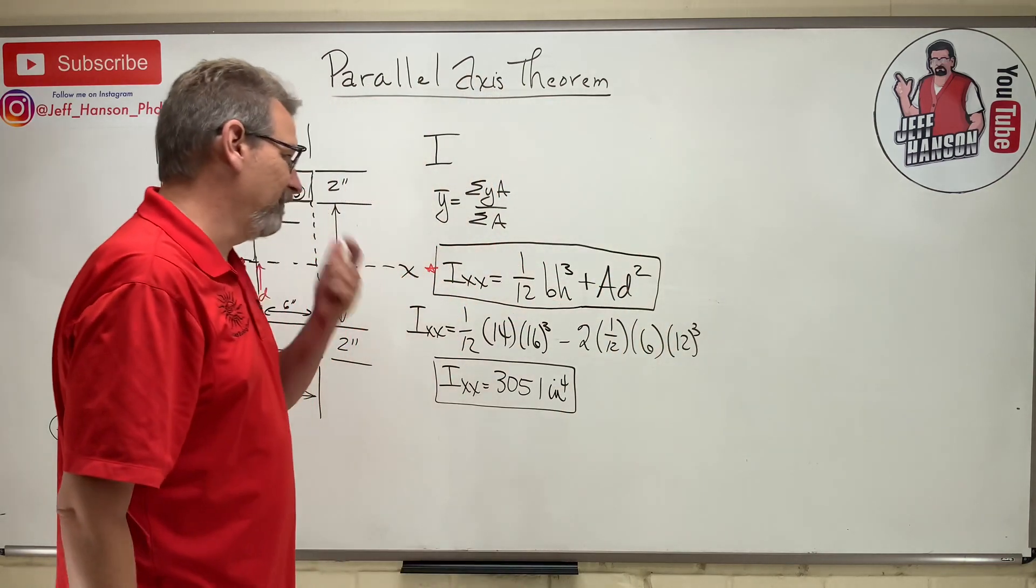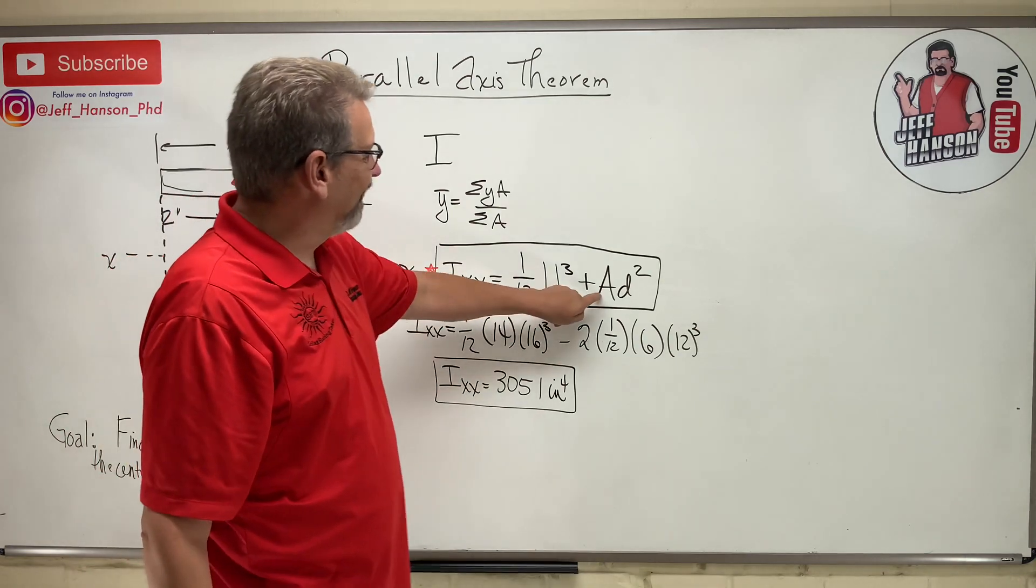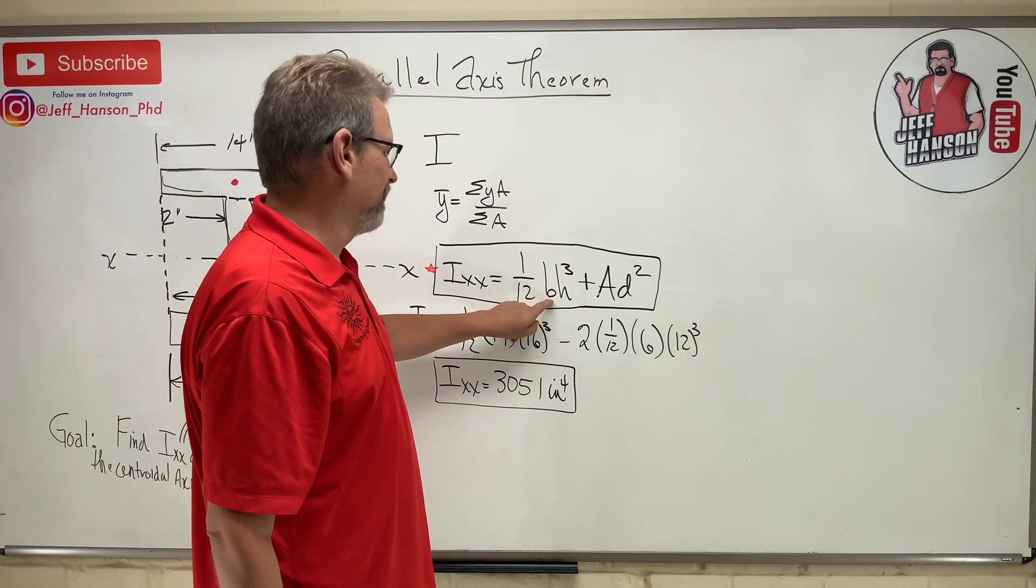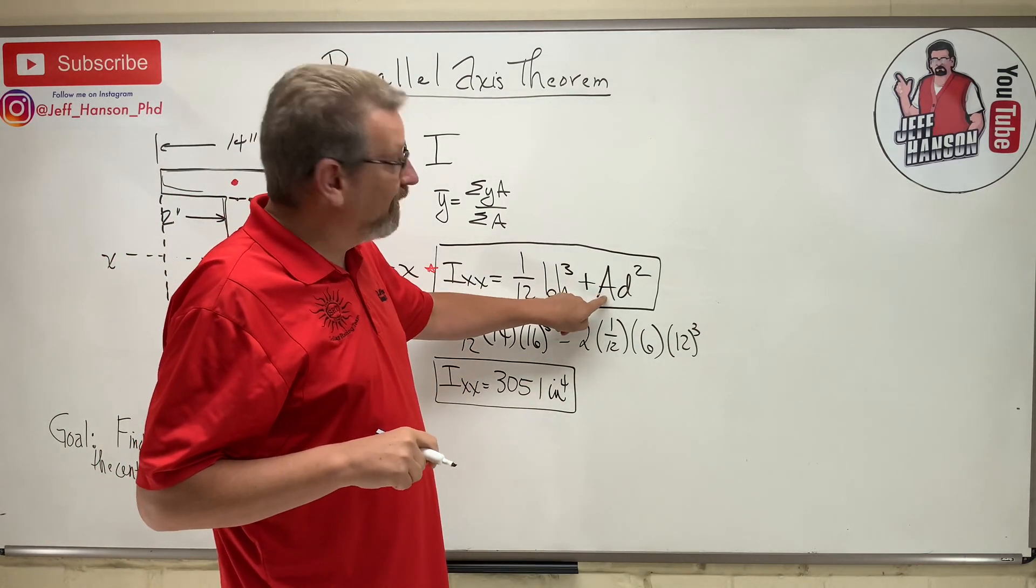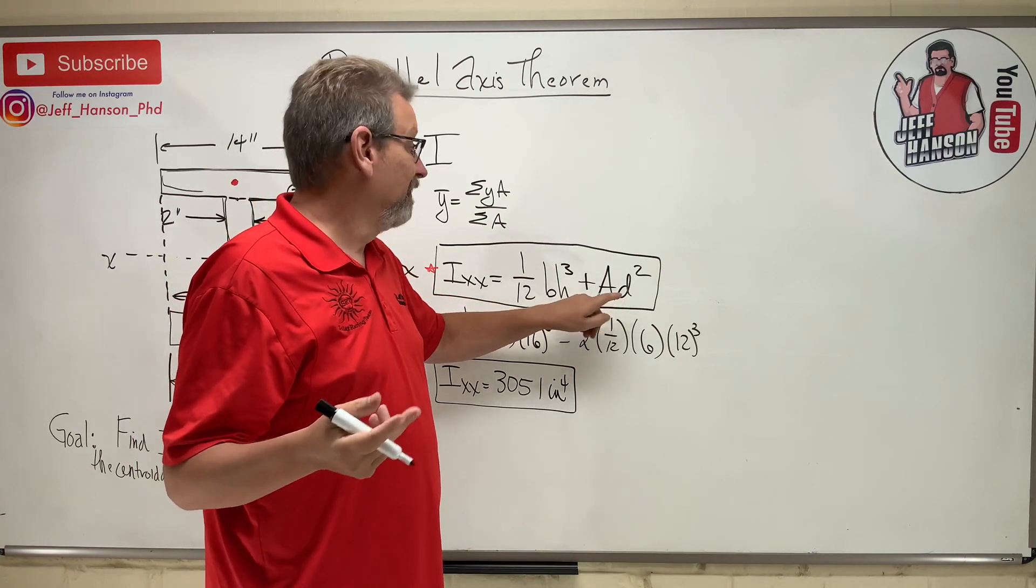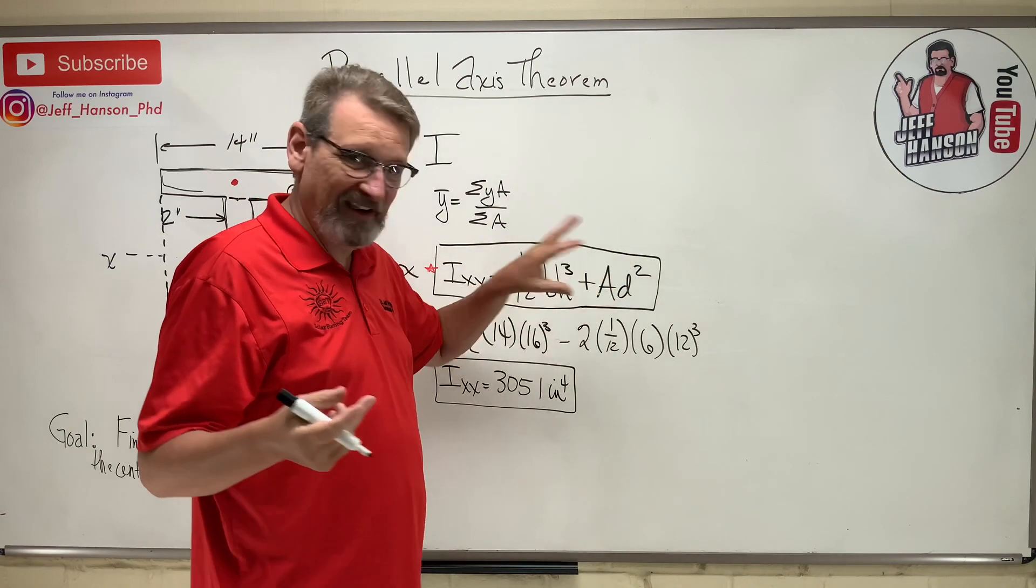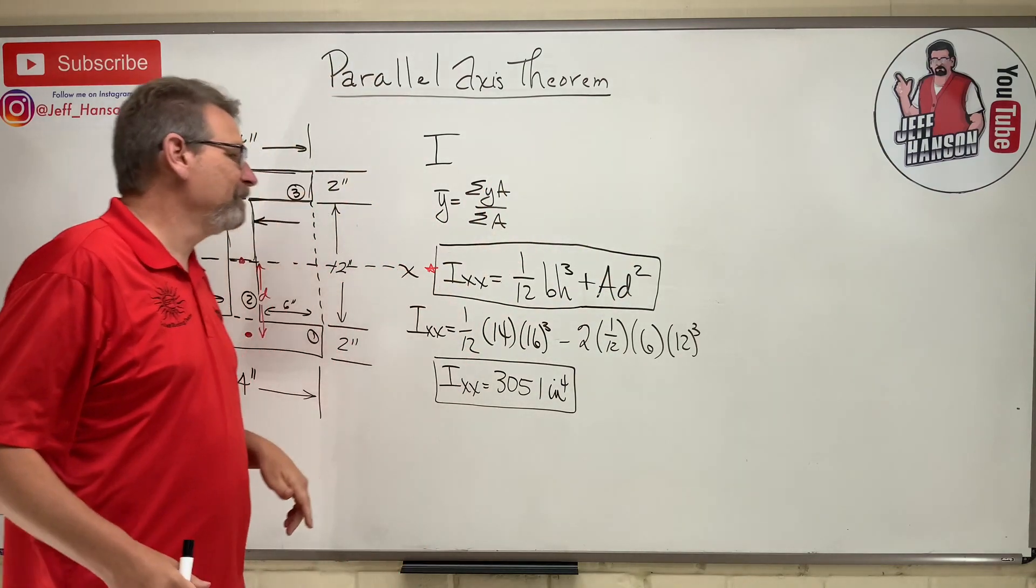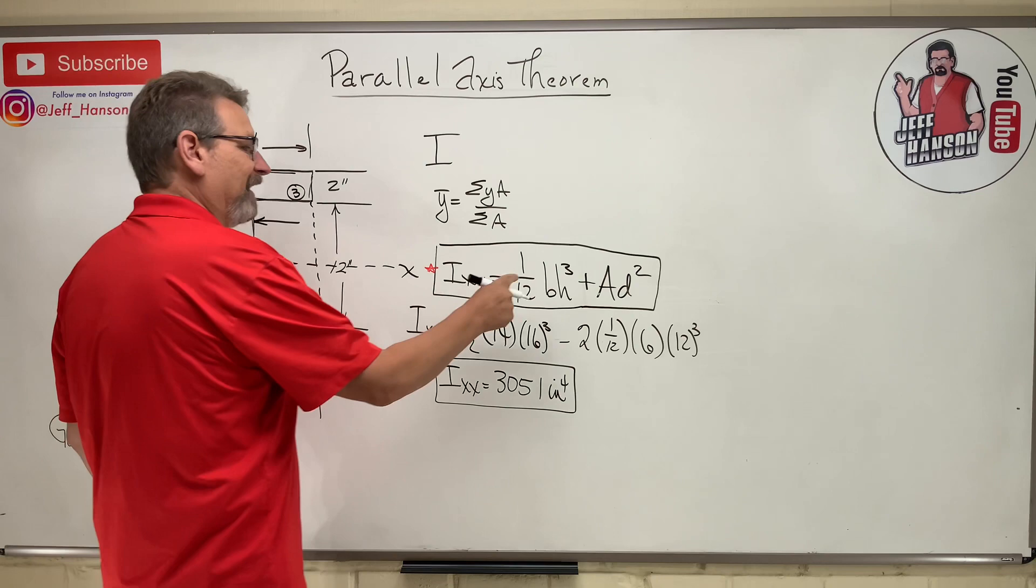That bit there is the transform. Wait, can you add that to that? Is that legal? Because that's inches to the fourth. Wait, an area is inches squared, and then you take a distance and square that. That's inches squared. So that's inches to the fourth too, isn't it? Apples plus apples. We're good. So this is the parallel axis theorem.